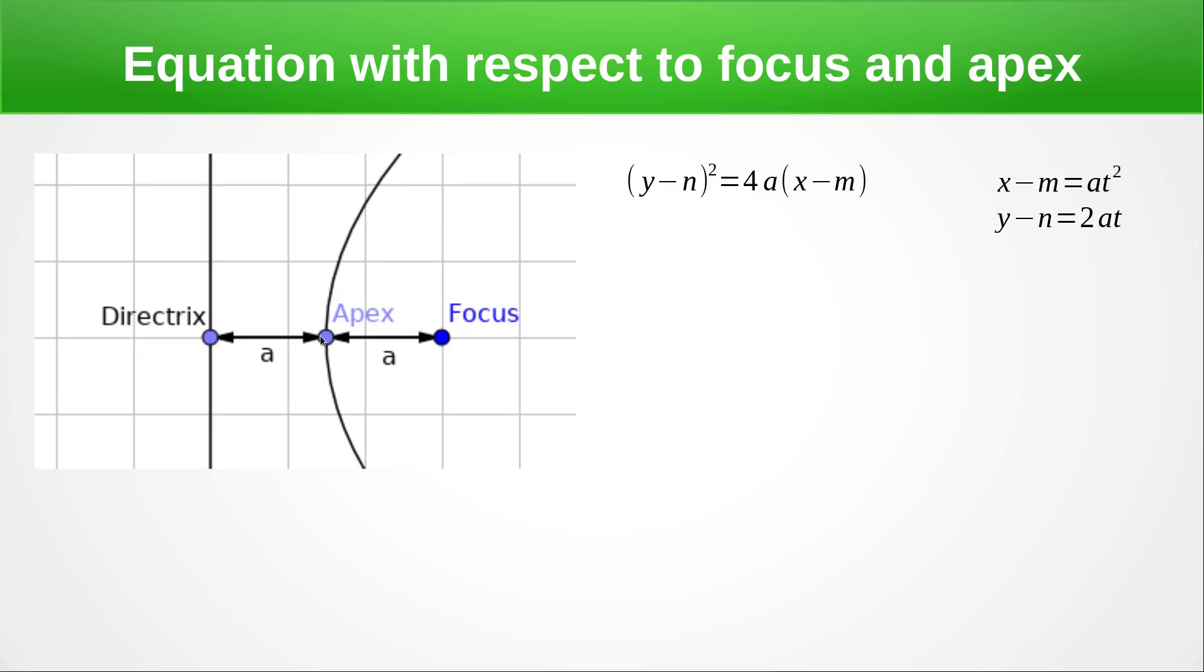We need to know the coordinates of the apex that will give us m and n. Obviously if it's at the origin they won't be there, so this will just become y squared equals 4ax. And we need to know the distance between the apex and the focus or the directrix and the apex, because they're the same thing. We take half the distance to give us our value of a.